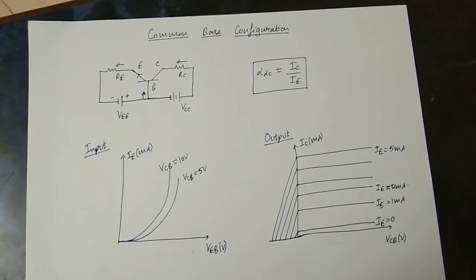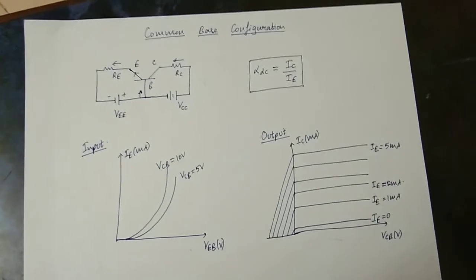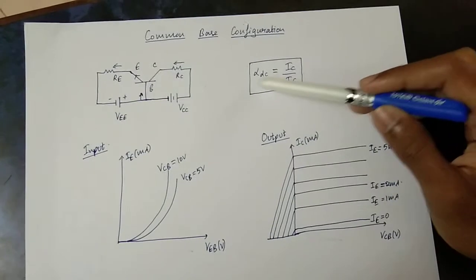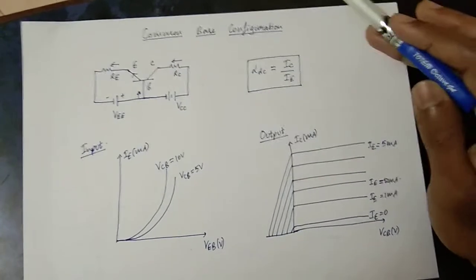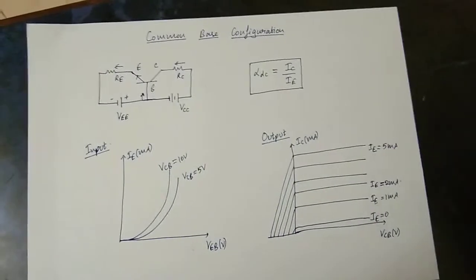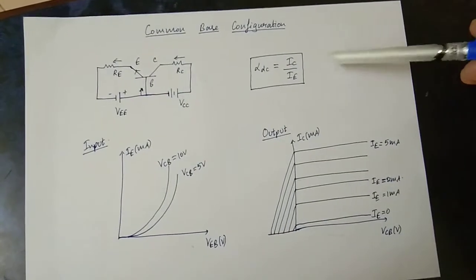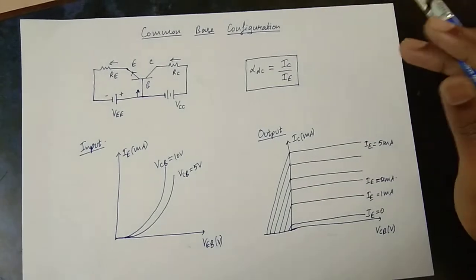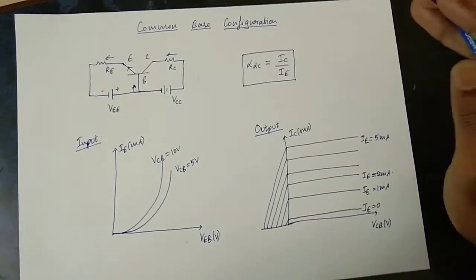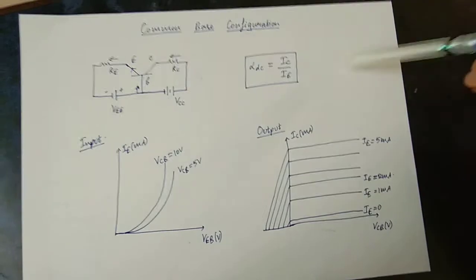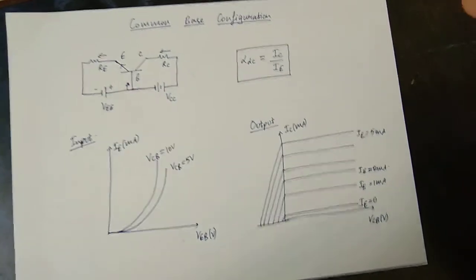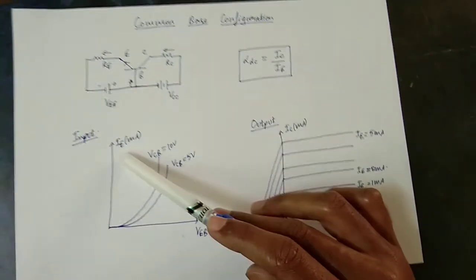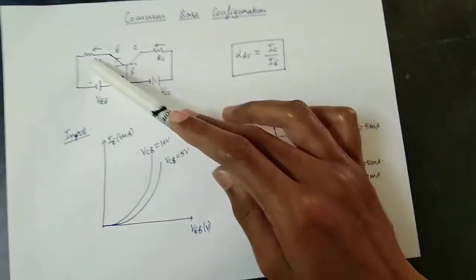This is the common base configuration. The amplification factor (alpha) is defined as IC divided by IE. The input characteristics are described by VEB versus IE.